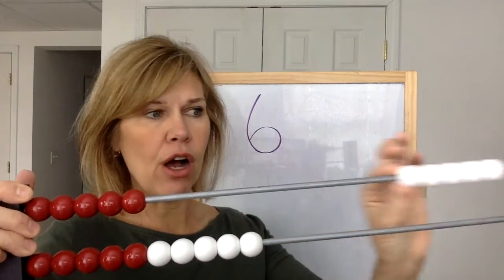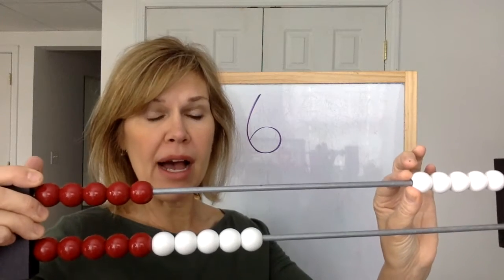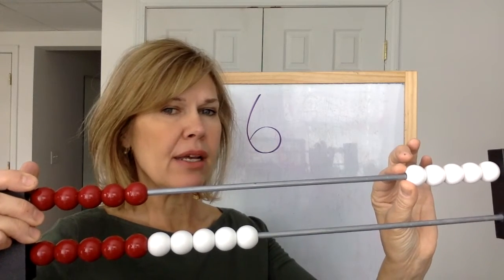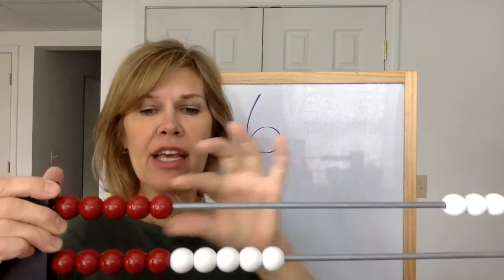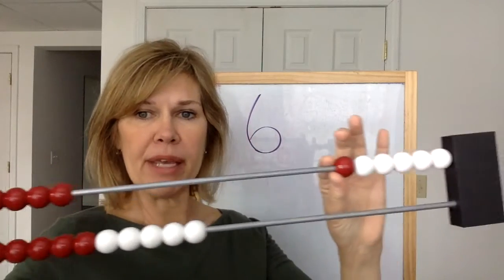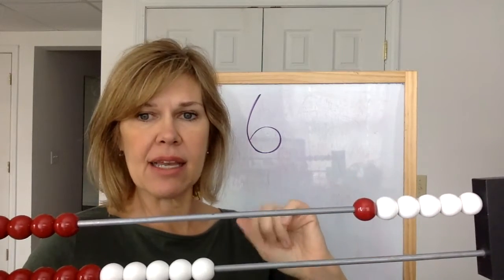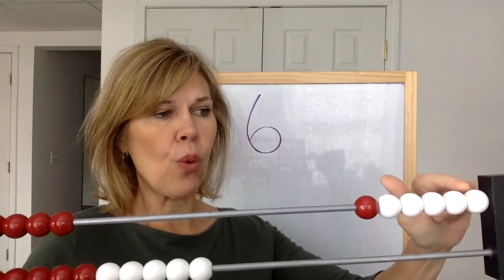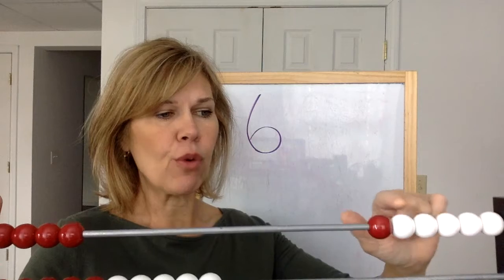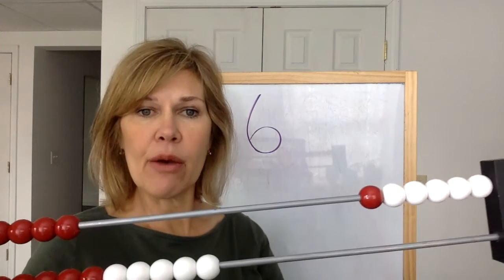So to make 6, I slide all of the white beads, which would be 5. How many more do I need? 1 more, that's right. So I slide 1 red bead. Without counting, I can just look and think 5, 6. Let's count just to make sure. 1, 2, 3, 4, 5, 6. That would be 6.